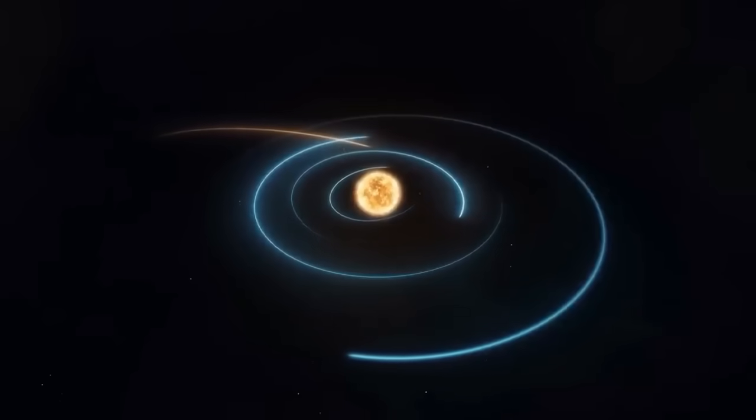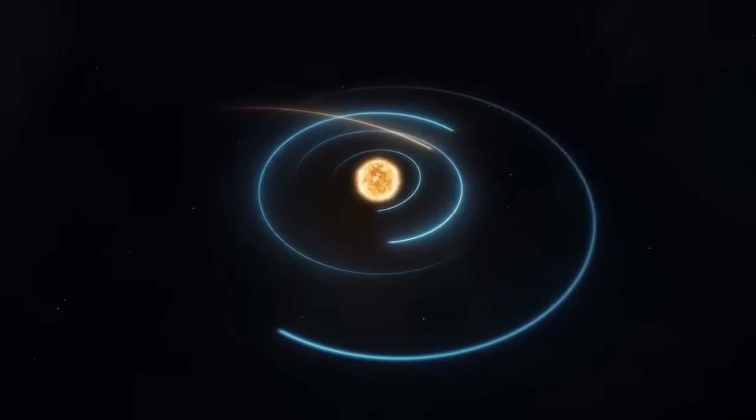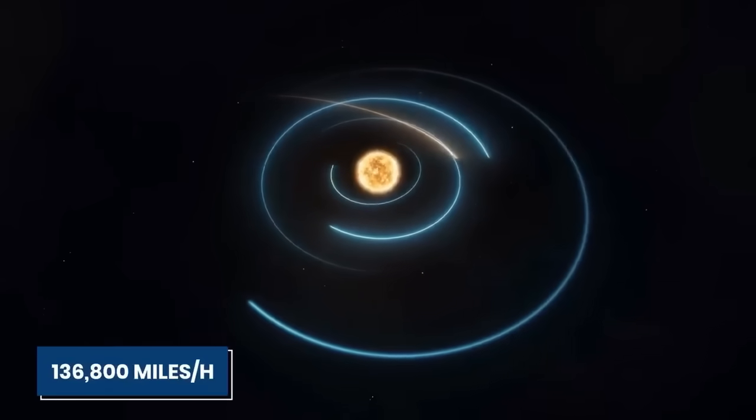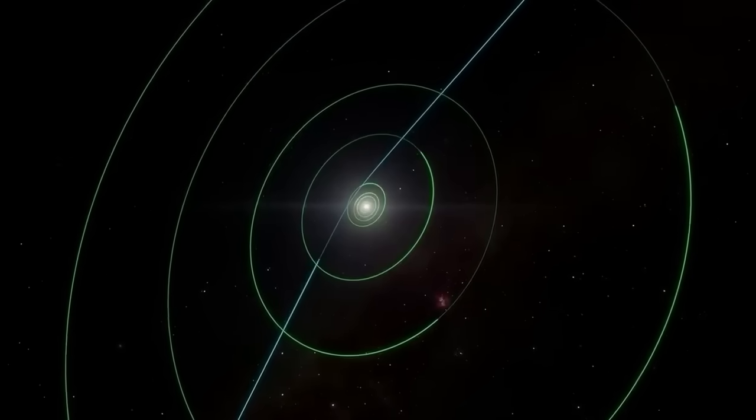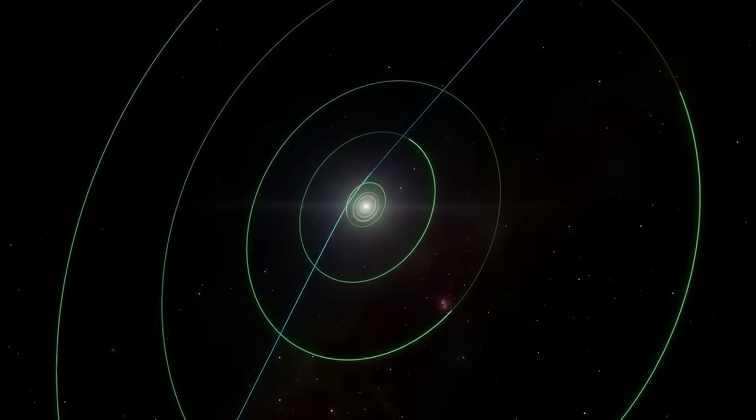The speed of 3I Atlas itself is a marvel. It's tearing through our solar system at approximately 38 miles per second, or about 136,800 miles per hour. This makes it one of the fastest objects ever recorded in our celestial neighborhood.